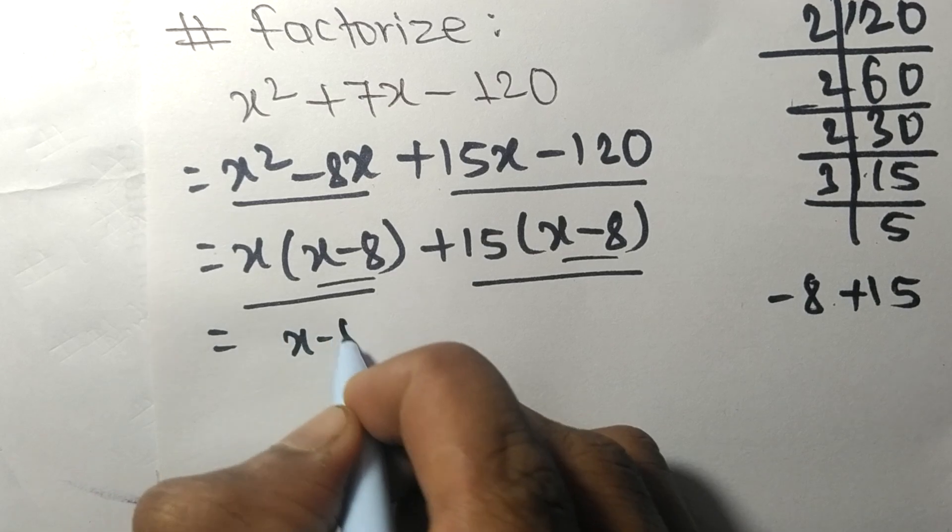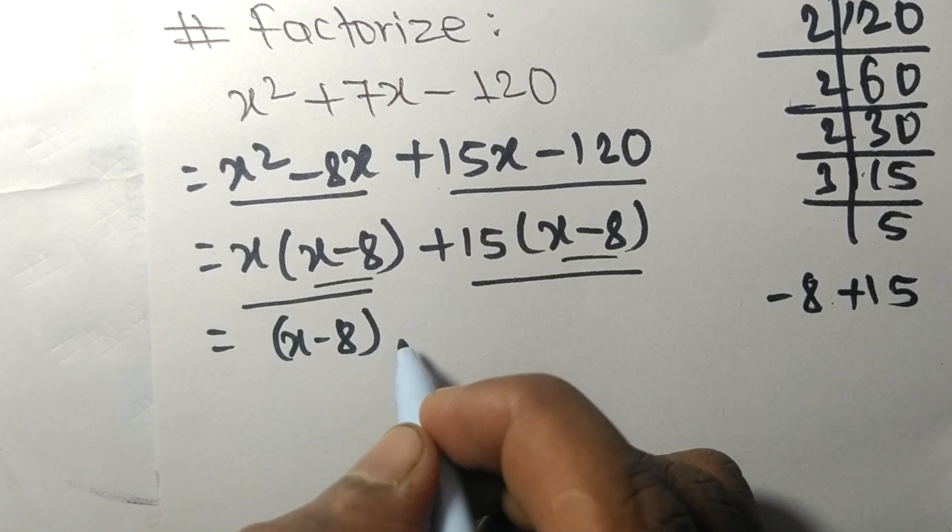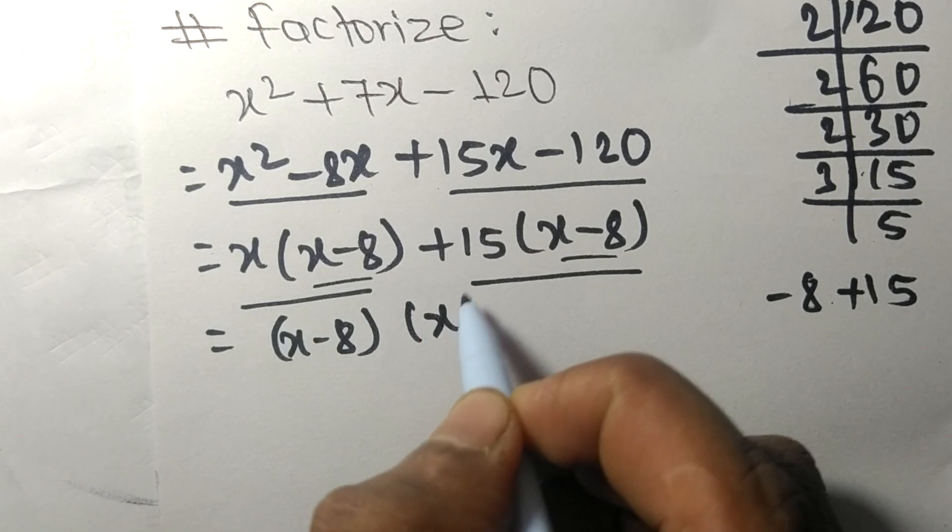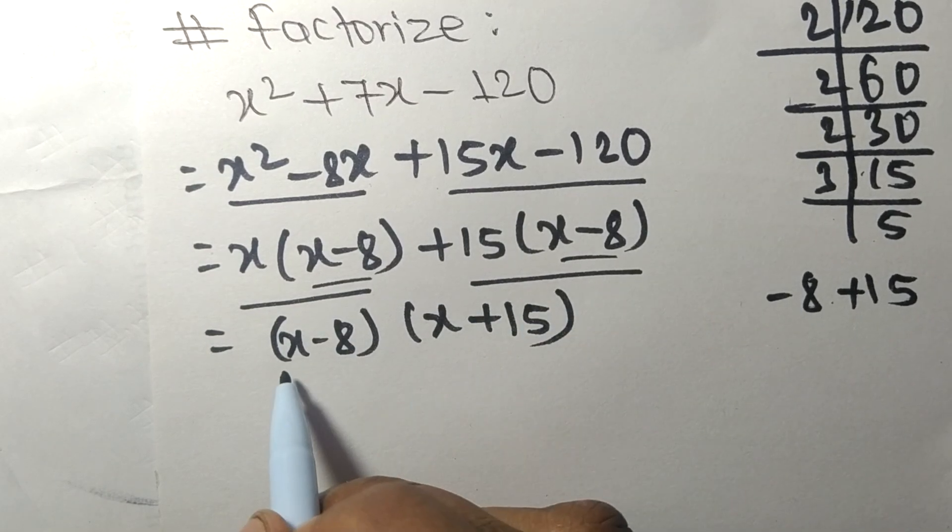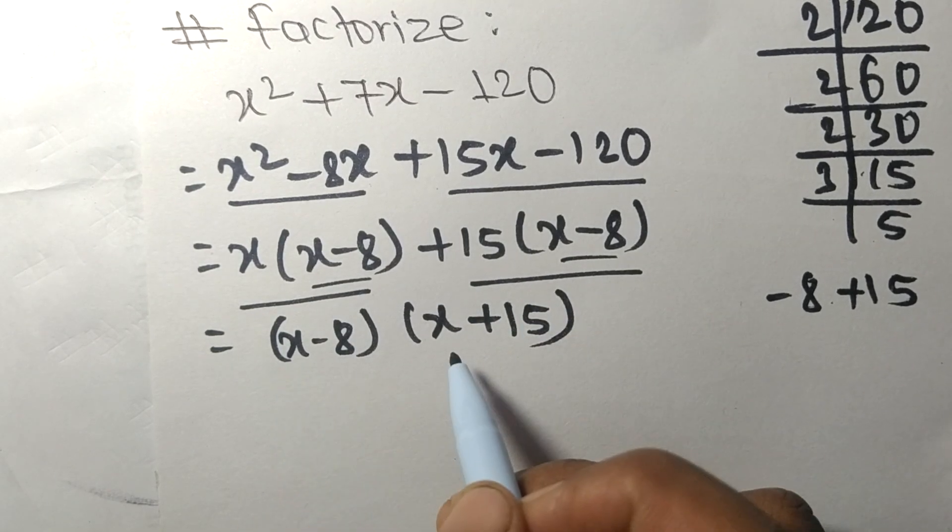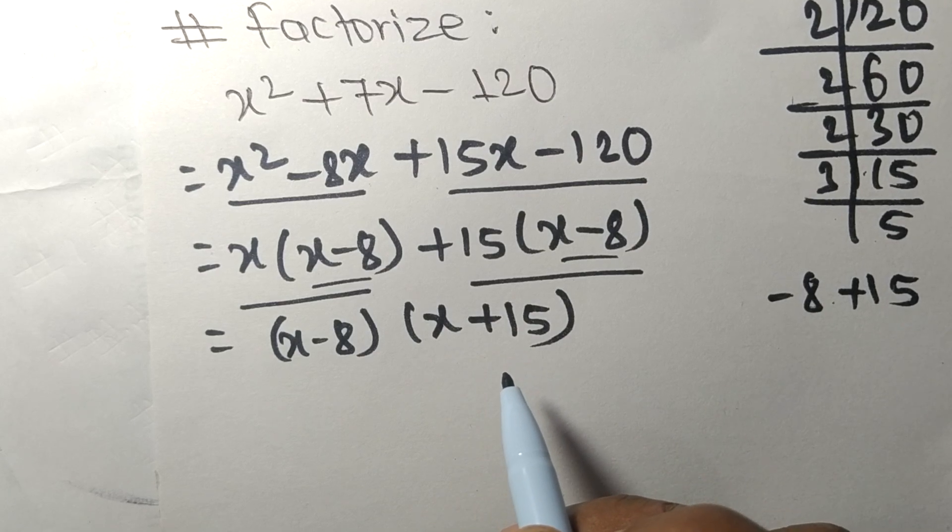So x minus 8, and the remainder gives x plus 15. Therefore (x - 8)(x + 15) are the required factors. Thanks for watching.